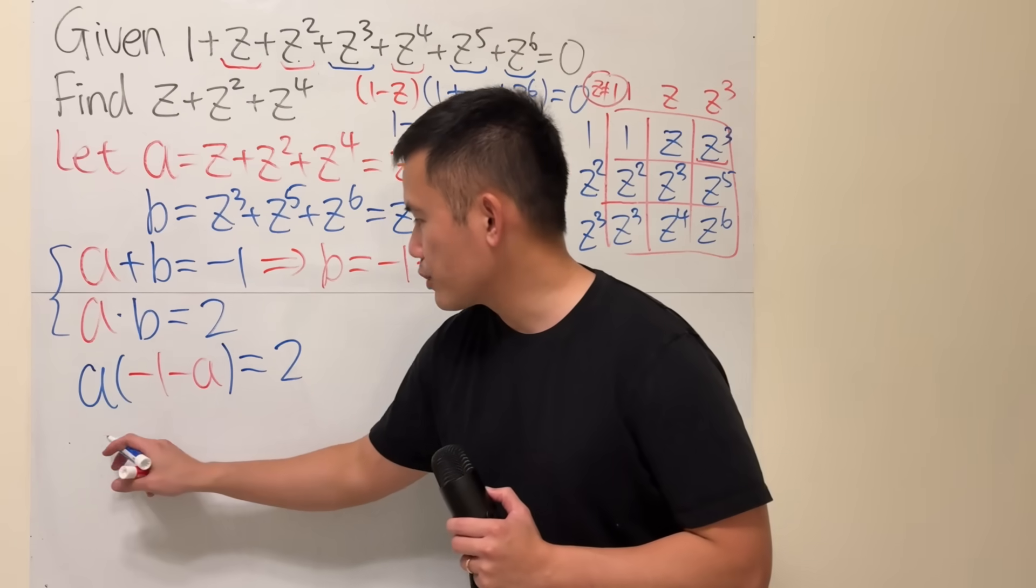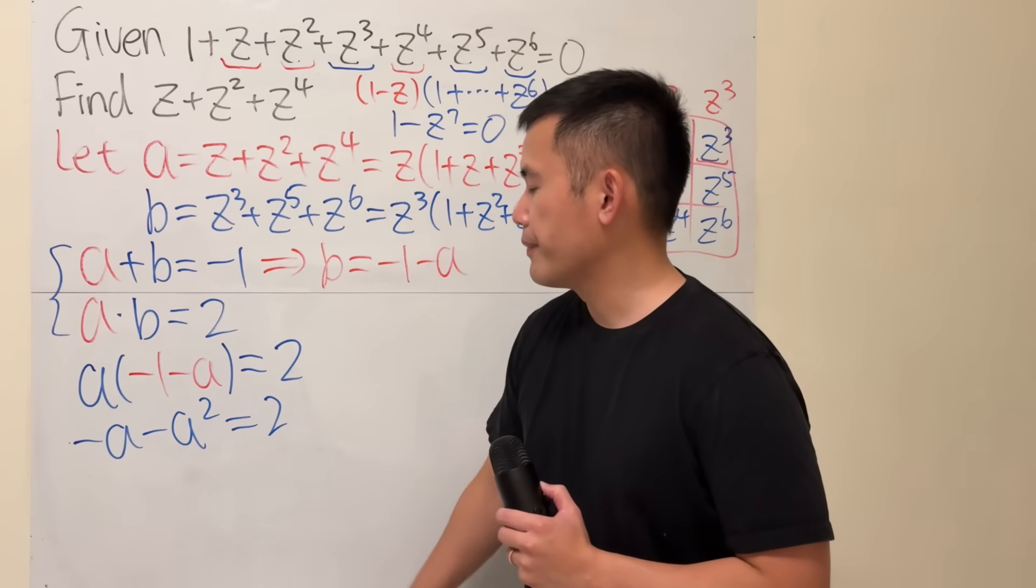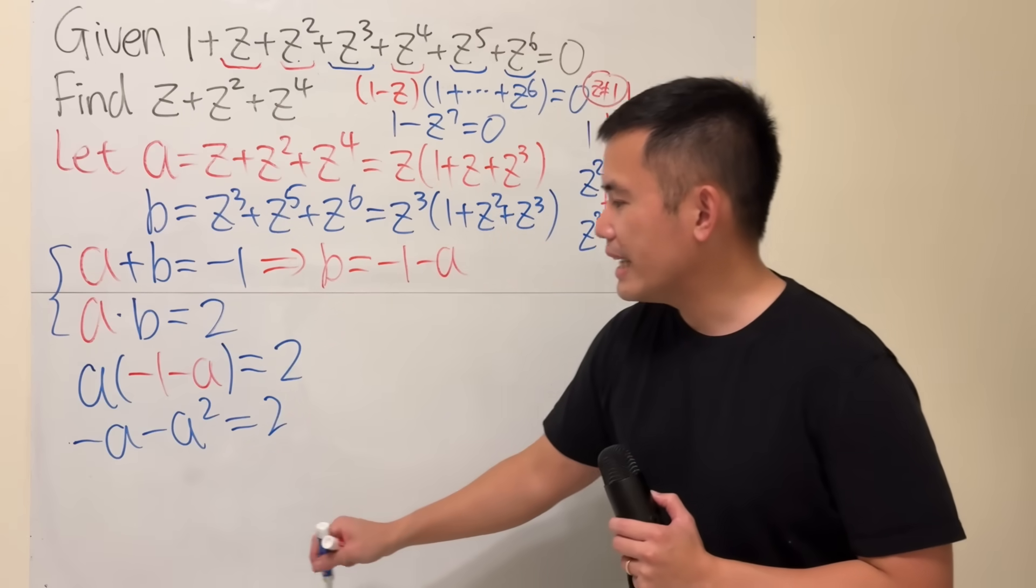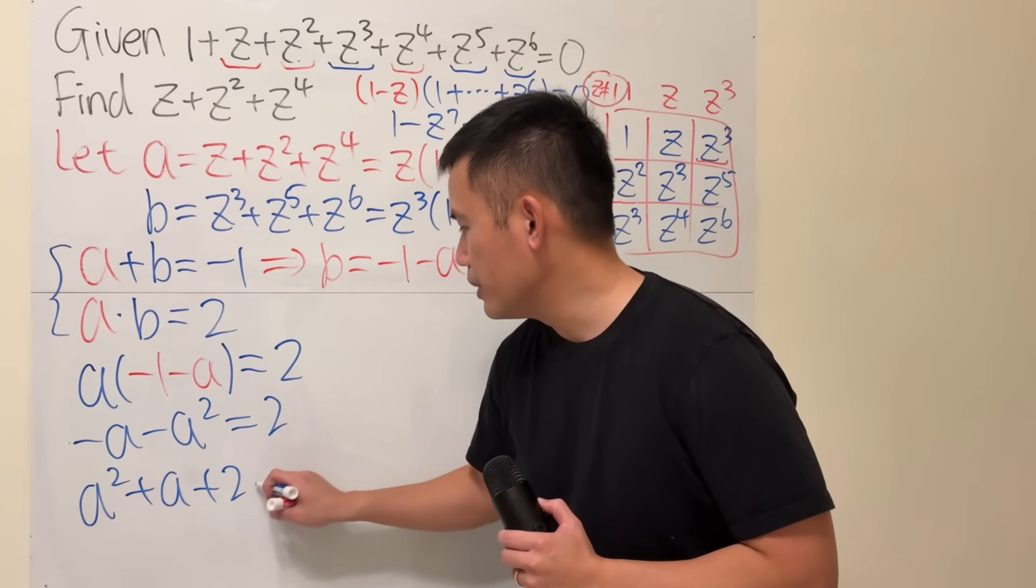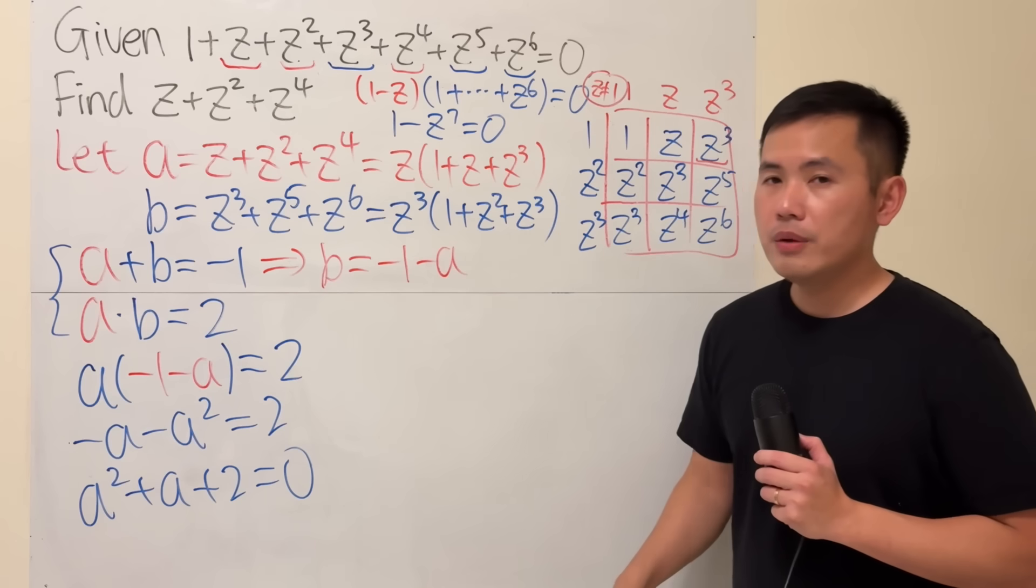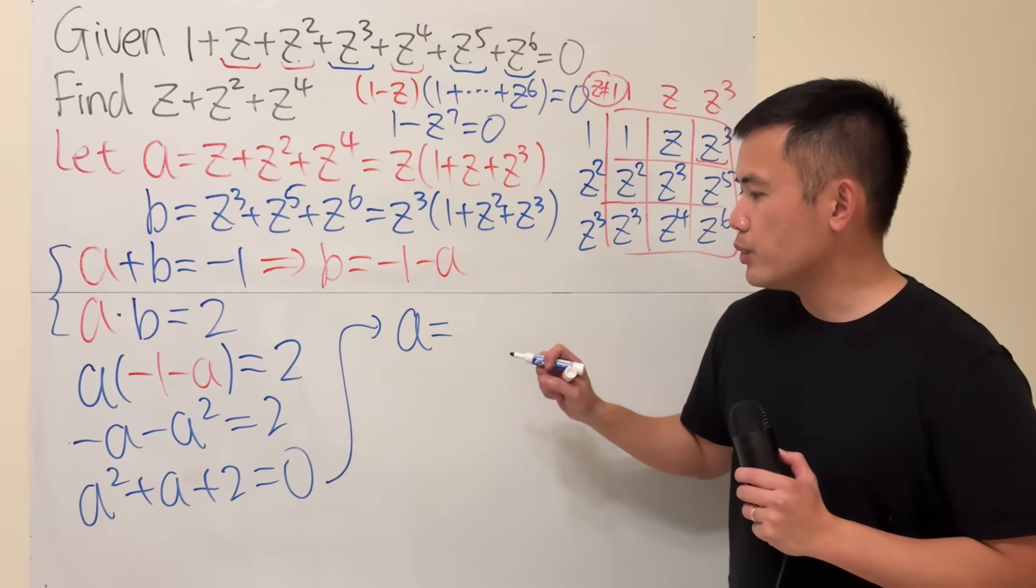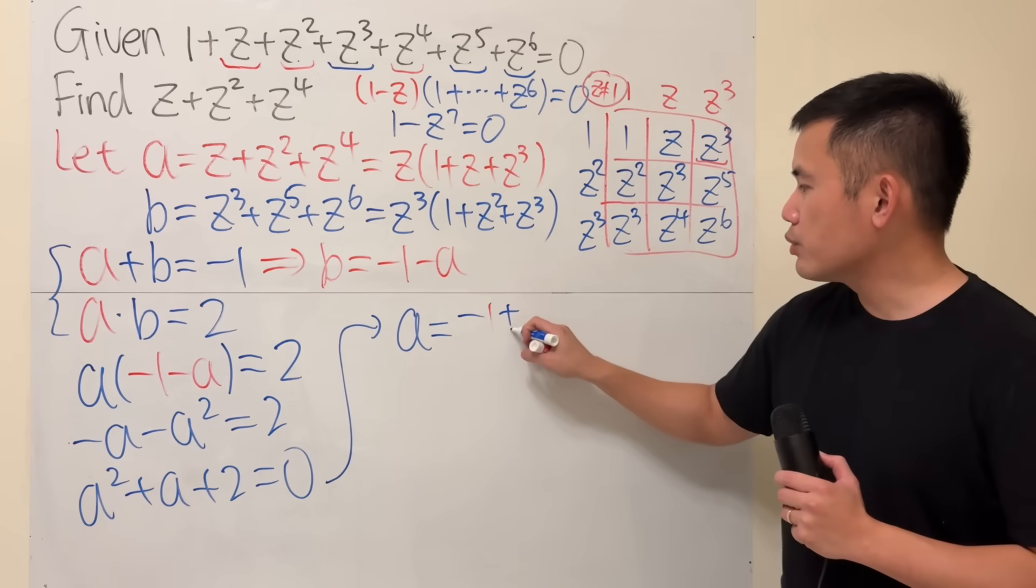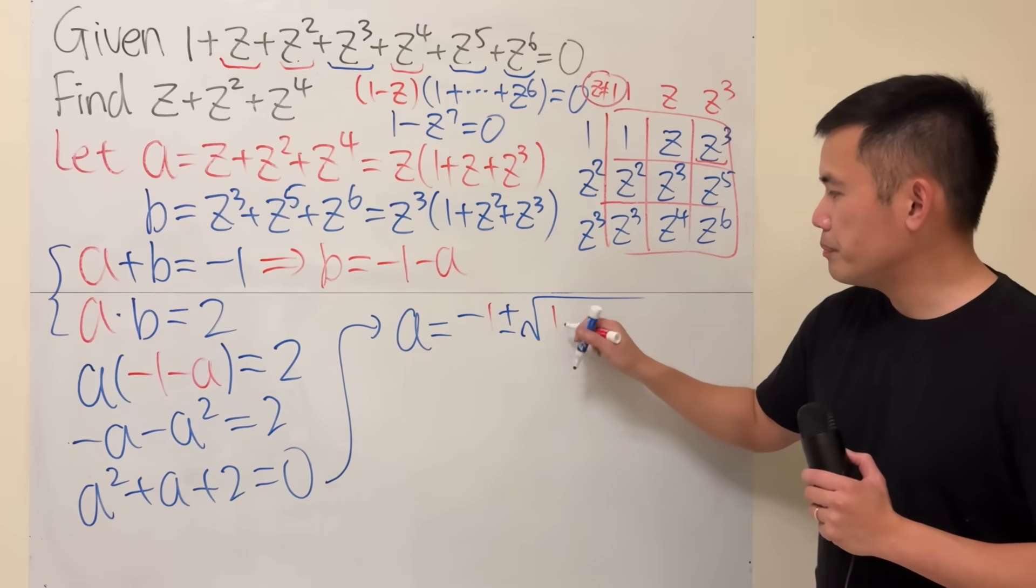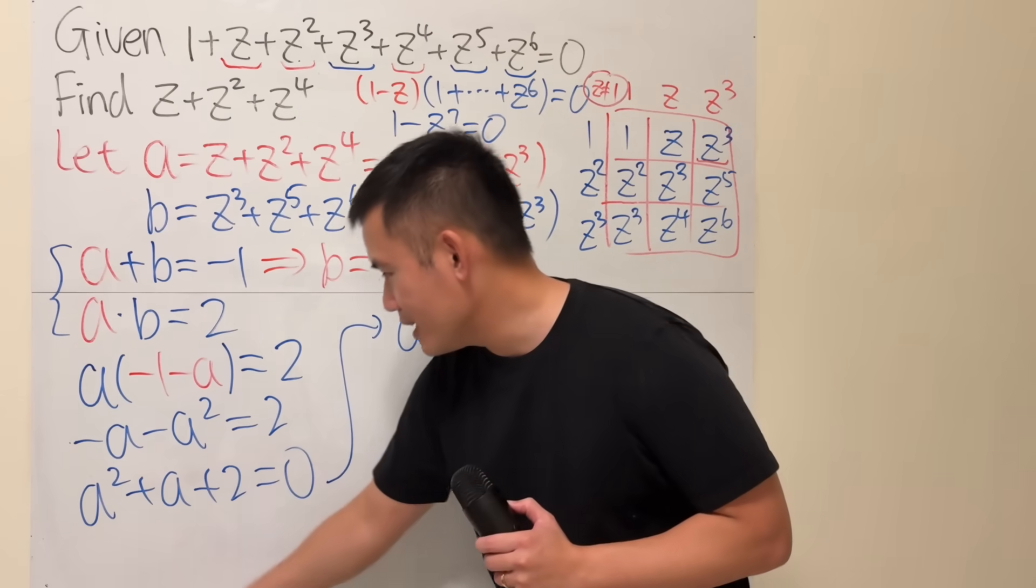We get a times negative 1 minus a is equal to 2. Work this out real quick. This right here is negative a minus a squared equals 2. Put these two terms to the other side. We get a squared plus a plus 2 equals 0. And then right here, let's just go ahead and use the quadratic formula.